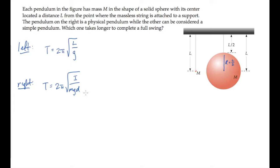We can find the moment of inertia i about the attachment point shown here using the parallel axis theorem. That tells us that i equals the moment of inertia about the center of mass plus m times d squared. i about the center of mass is 2 fifths mr squared for a solid sphere, and the distance d from the center of mass to the pivot equals capital L.